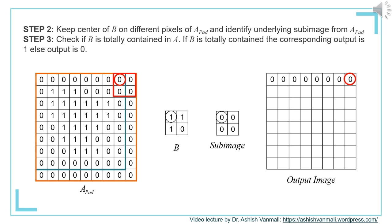For the first row, every time the output is 0 because B is never totally contained. Moving to the second row, second pixel: the sub-image is now 1,1,1,1,1. Comparing with B, there are ones at all locations of ones of B. Hence B is totally contained and the output is 1 at this location.